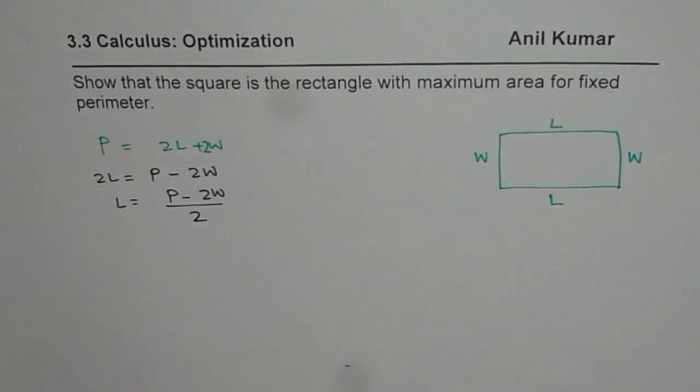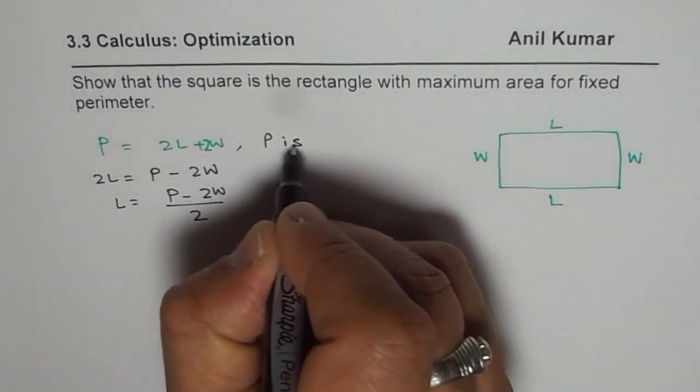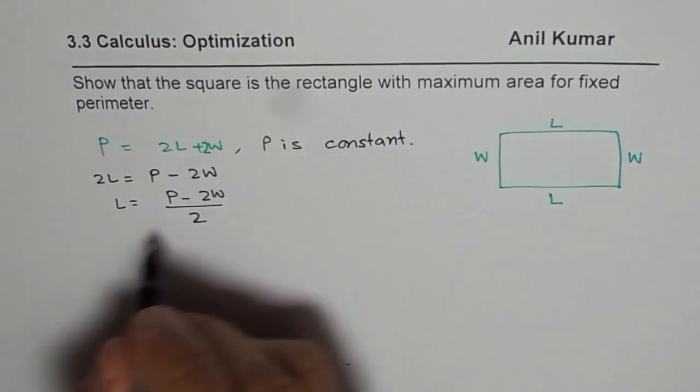So we get length in terms of width and perimeter where we know perimeter is constant, constant or fixed. Now, what is area?